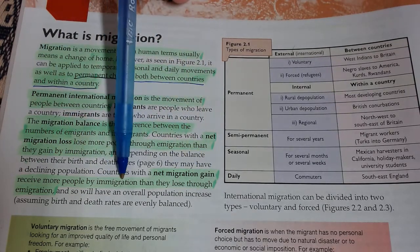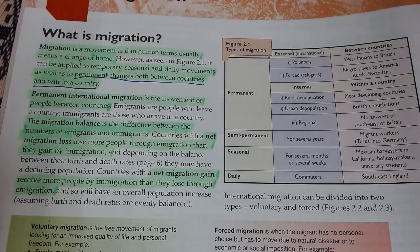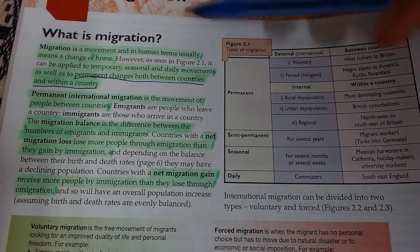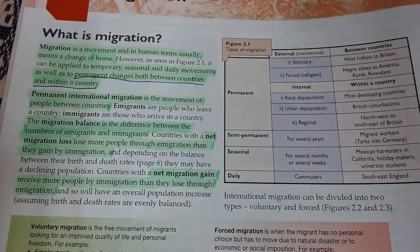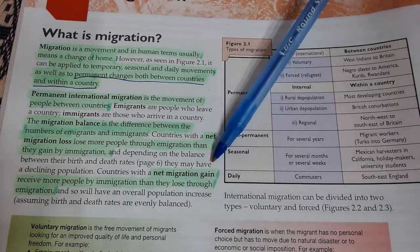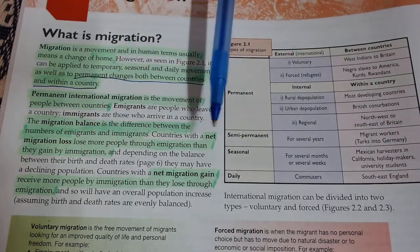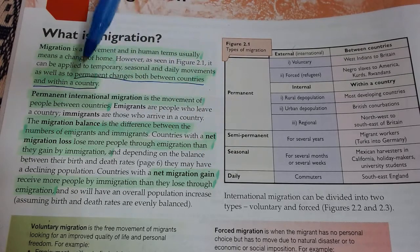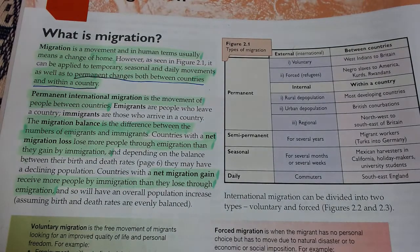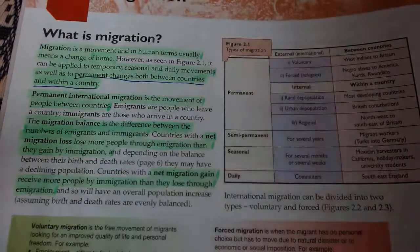On the other hand, a migration gain means a country receives more people through immigration than it loses through emigration. If more people are moving in each year than leaving, your population will go up. There's a lot of vocabulary here but it's fairly straightforward. You need to know the migration balance — you can have a loss or a gain — and be aware that migration can happen within a country as well as between countries.